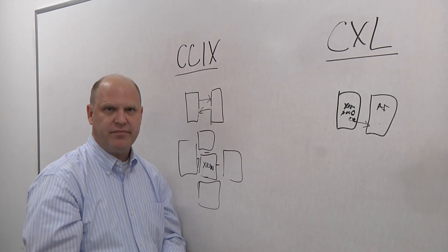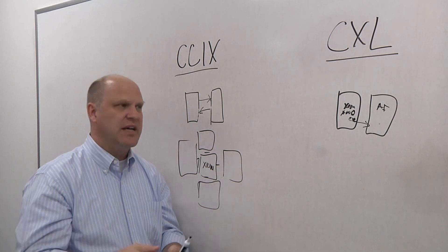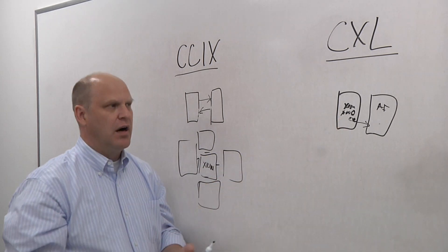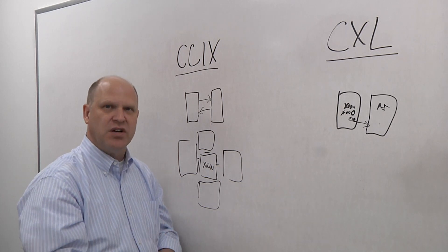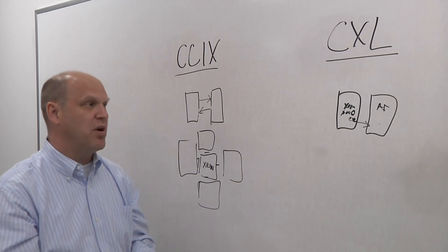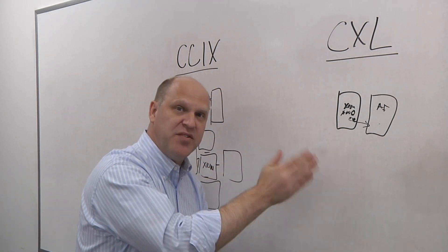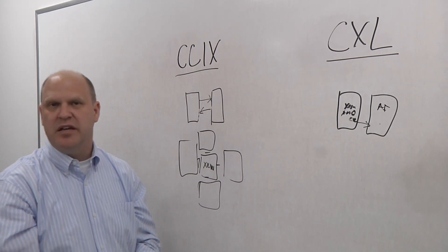How about CXL? CXL is more for, hey, given that we have this x86 processing, let's be able to put a card, put a line card on there with our AI processing or some other kind of algorithmic processing and put that in the PCIe slots and have that be a slave to those Xeons that are already in that system.